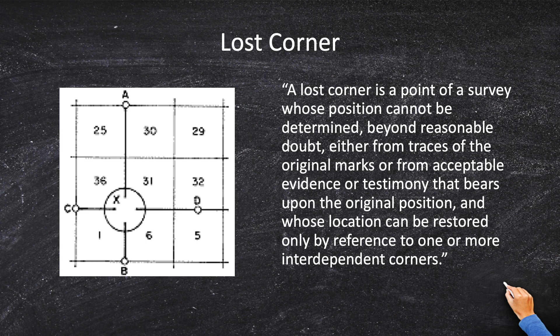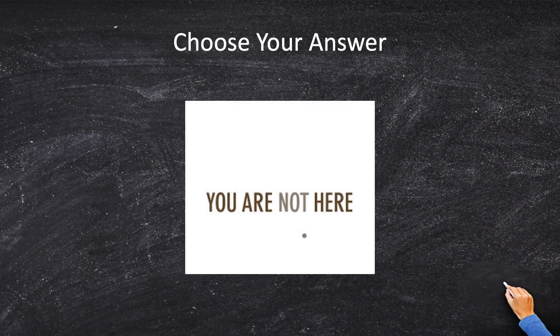So what is an obliterated corner? Is it A — monuments and accessories? B — no remaining traces but you can reset it using testimony? Or C — no remaining traces with no recovery method? It sounds like it's going to be B: one at whose point there are no remaining traces of the monument or accessories, but whose location can be perpetuated by other evidence. Know your public land system and know it well, because it will be tested on your California exam.